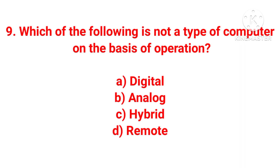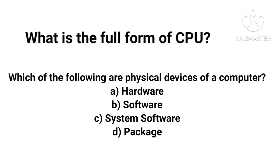Question number nine: which of the following is not a type of computer on the basis of operation? Options are digital, analog, hybrid, or remote. There are three types of computers — digital, analog, and hybrid. Remote is not a type of computer. The correct answer is option D — remote.